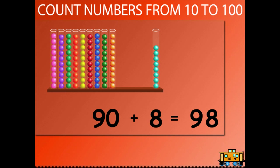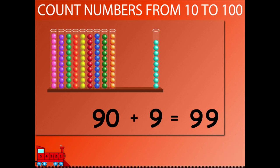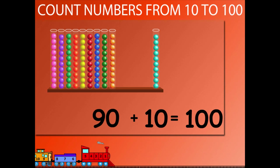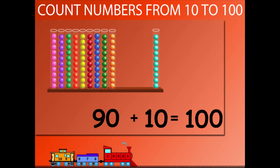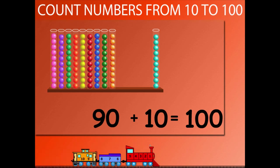90 plus 8 is equal to 98. 90 plus 9 is equal to 99. 90 plus 10 is equal to 100.